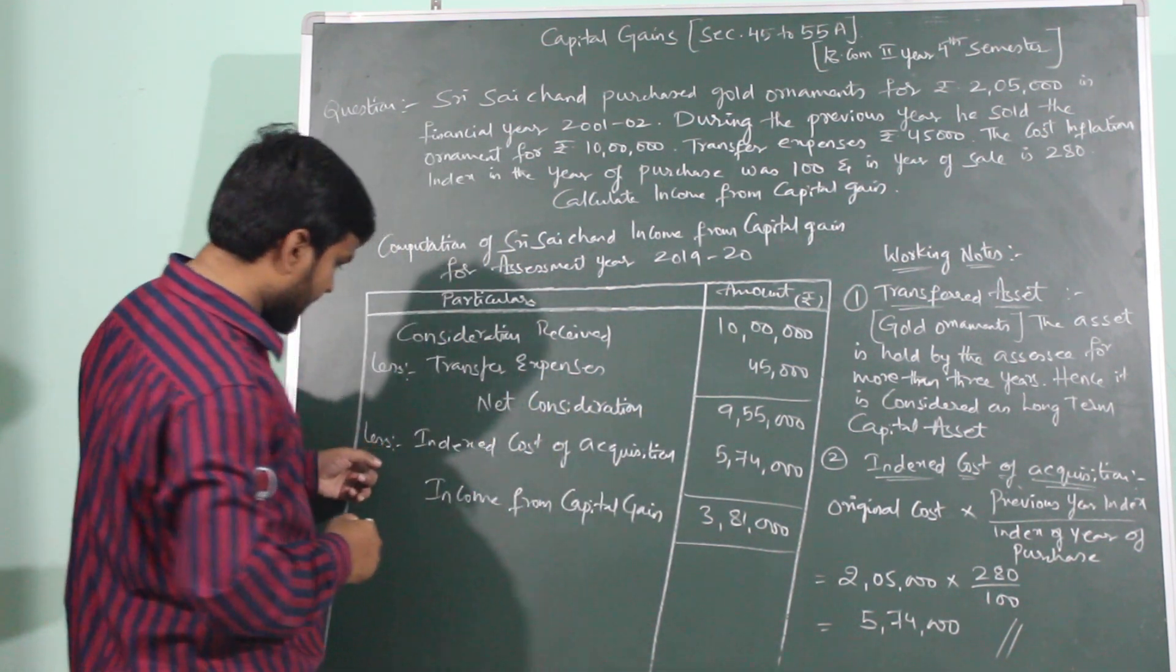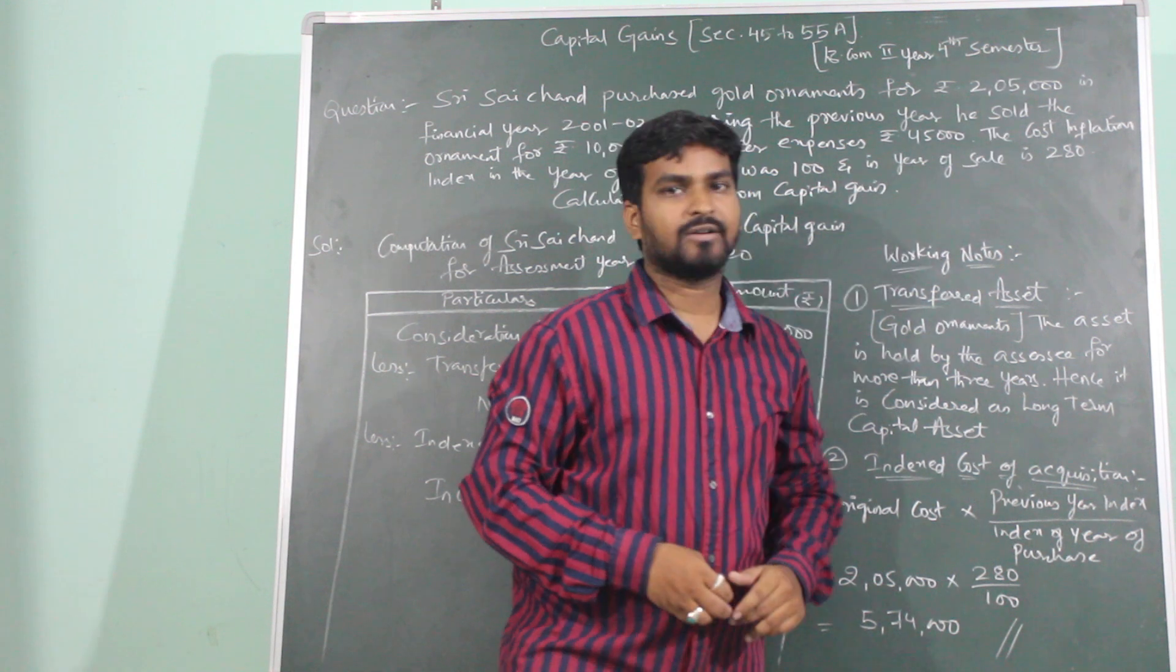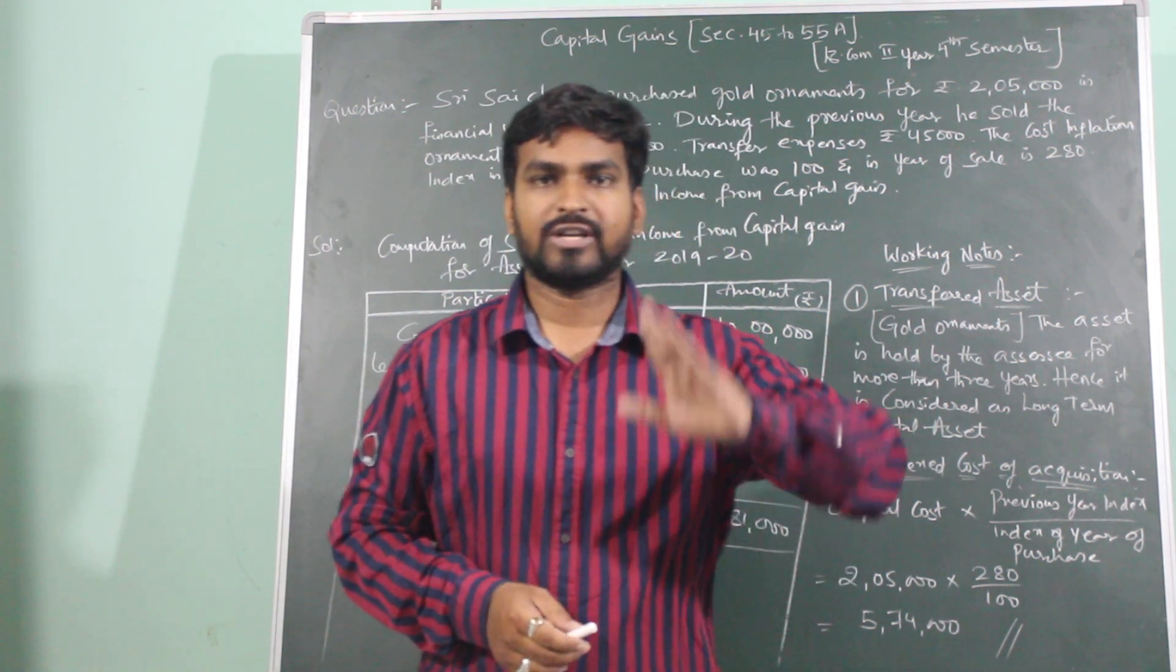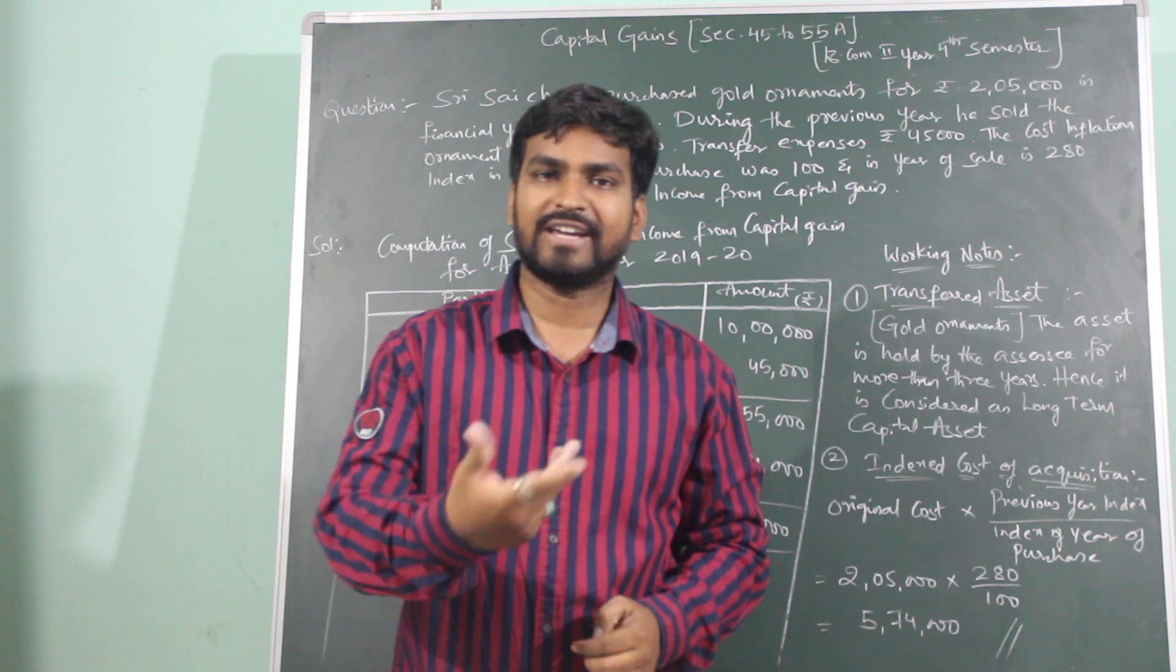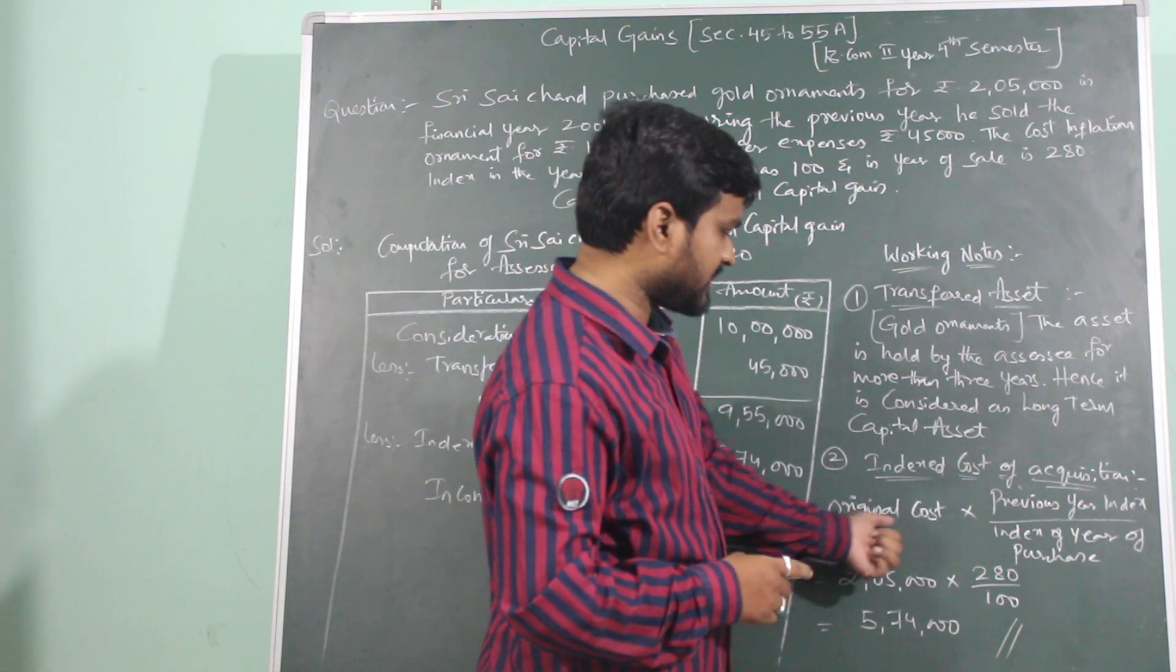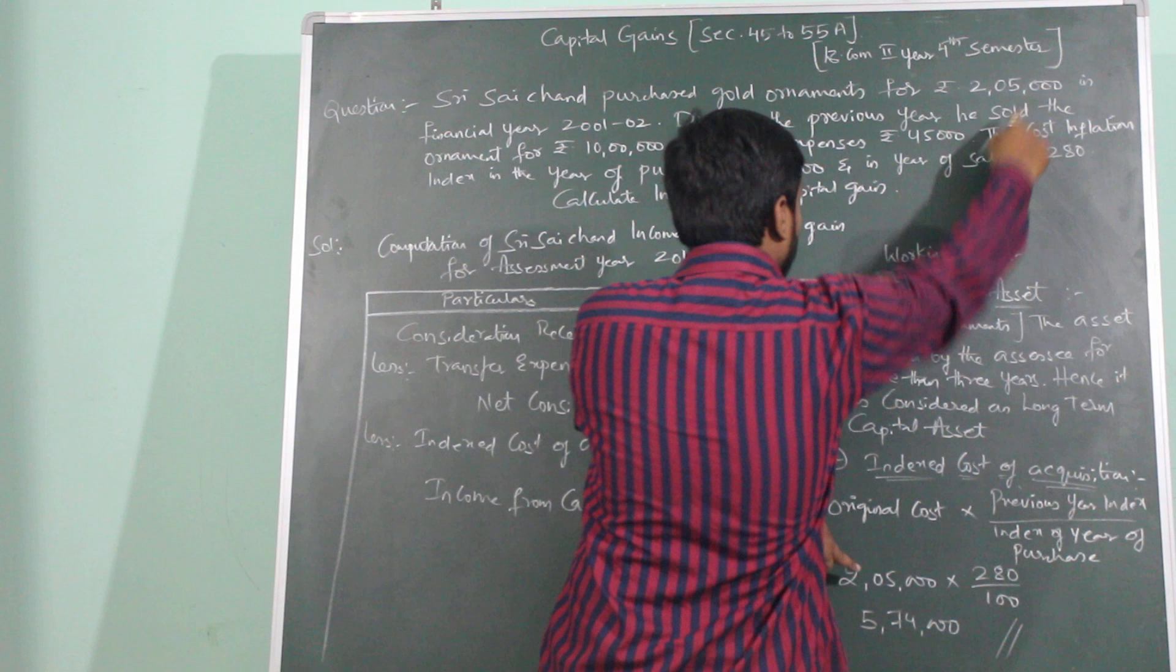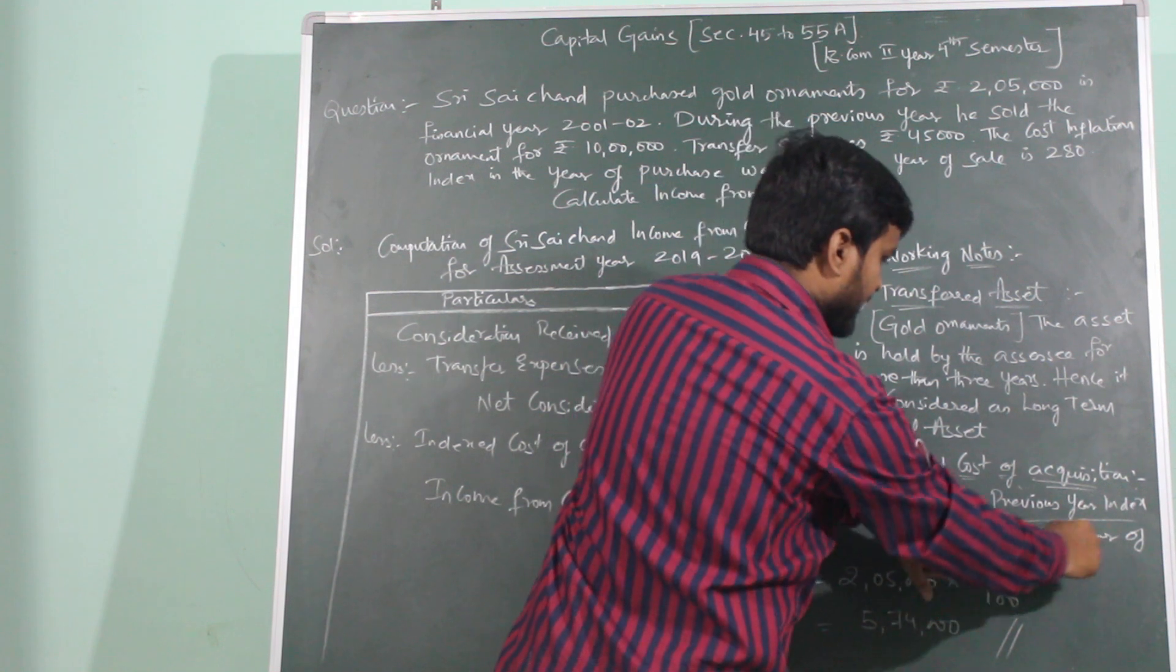Now from net consideration, subtract indexed cost of acquisition. Formula: Original cost into previous year index divided by index of year of purchase. Original cost of gold ornament was 2 lakhs 5,000. Previous year index is 280, divided by index of year of purchase.